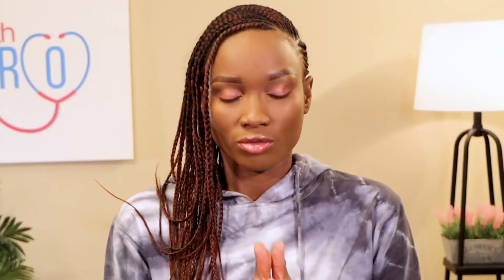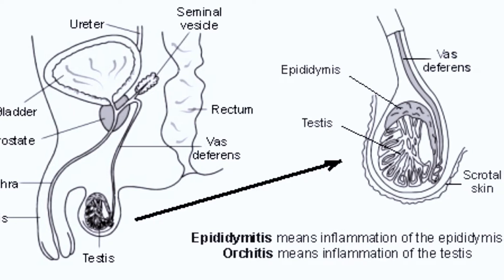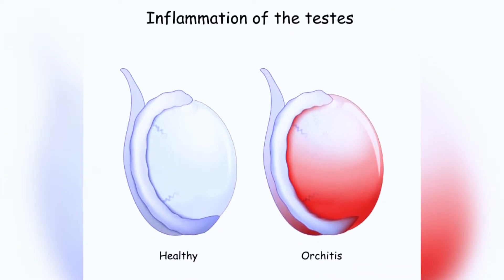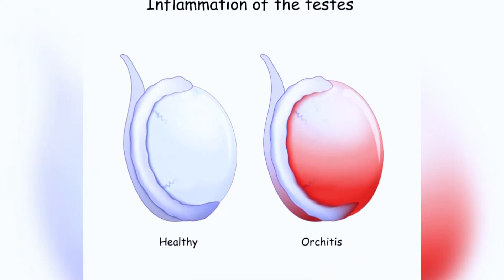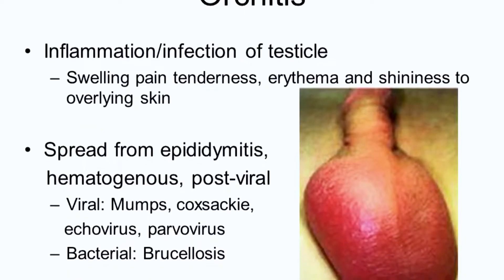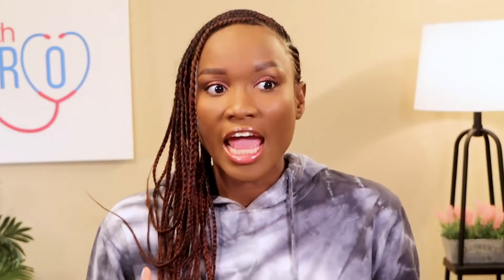What type of infections are we talking about? Any genital tract infections — any infections that possibly affect your testes, because that's where the sperm is stored. Like orchitis — that can cause infertility.